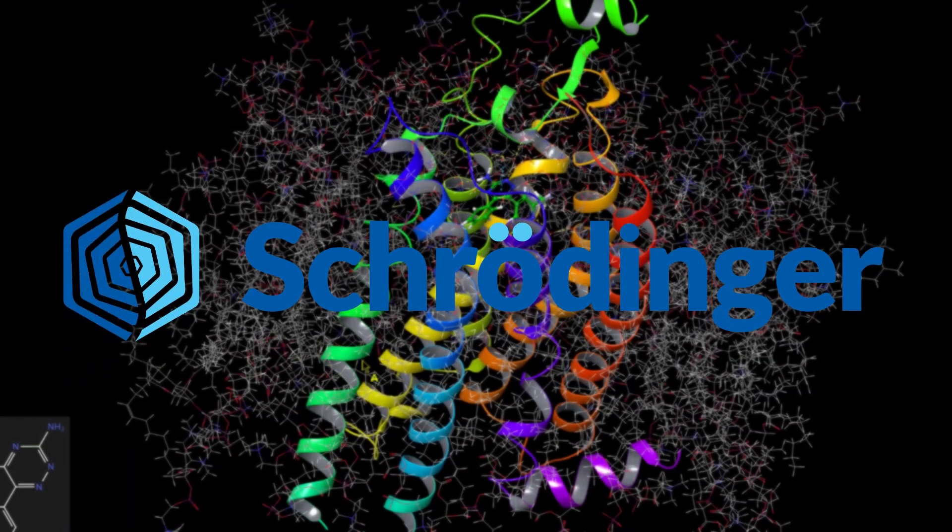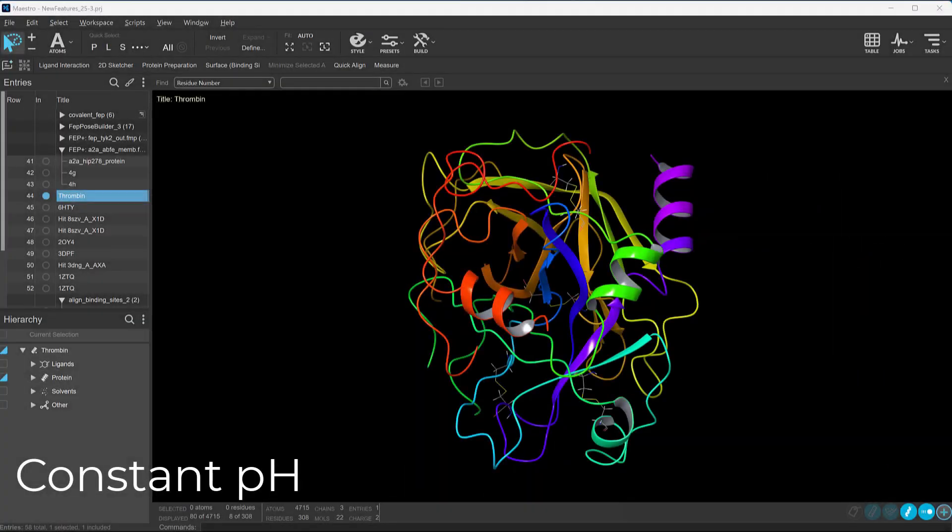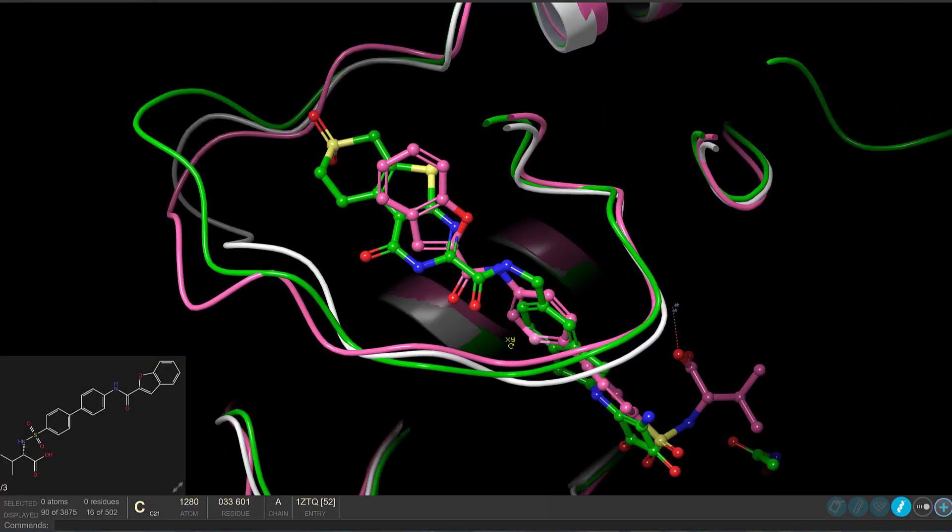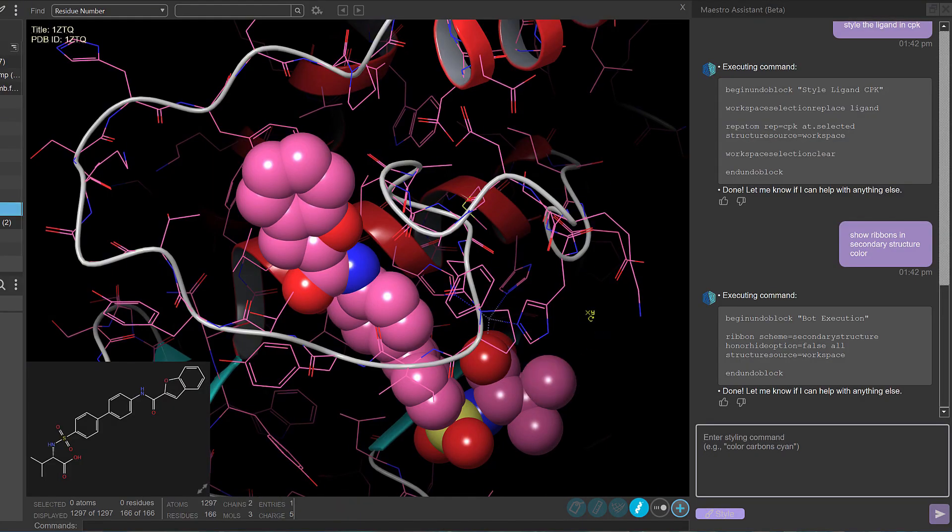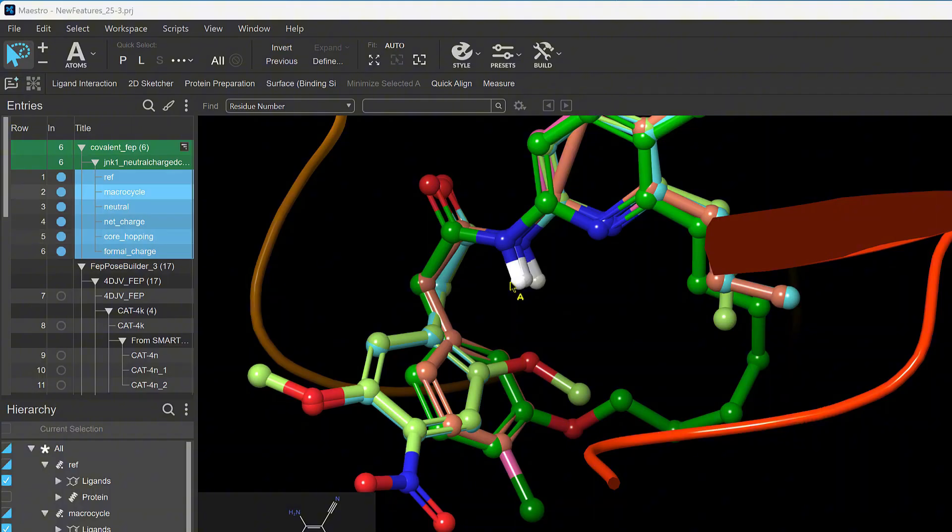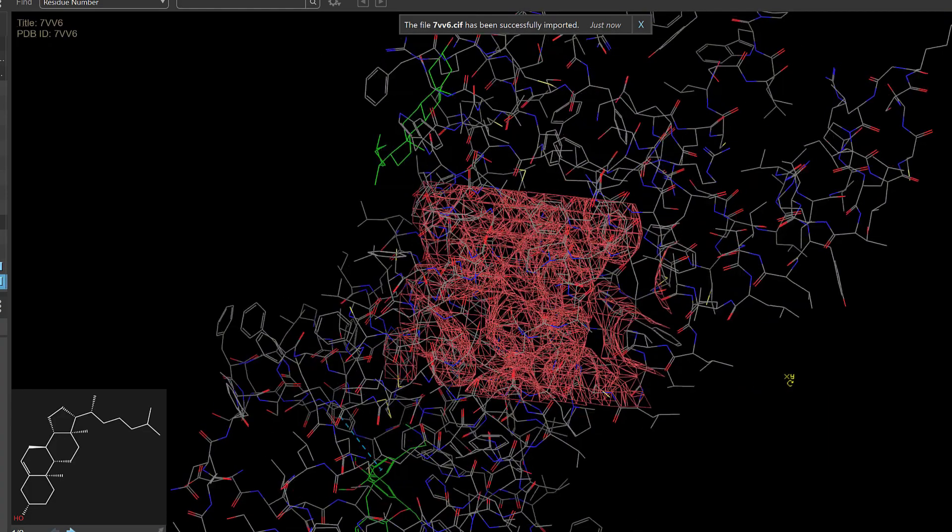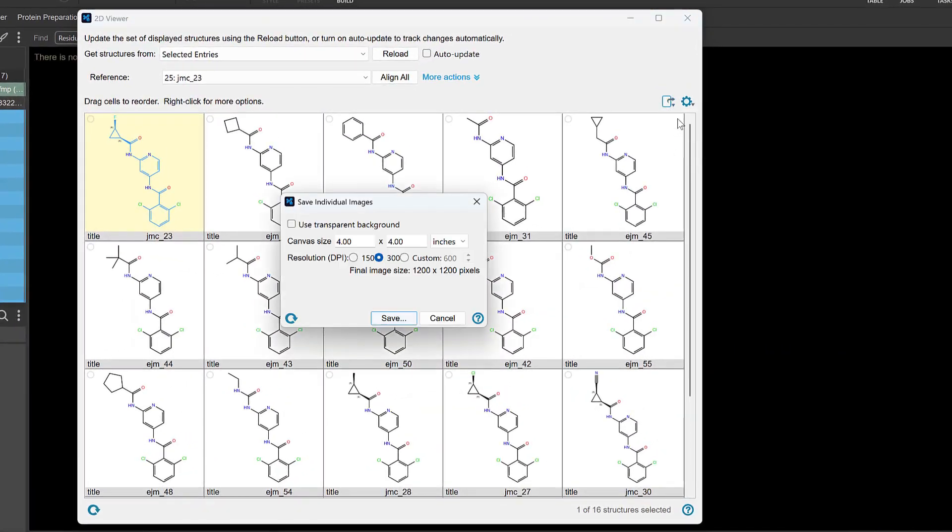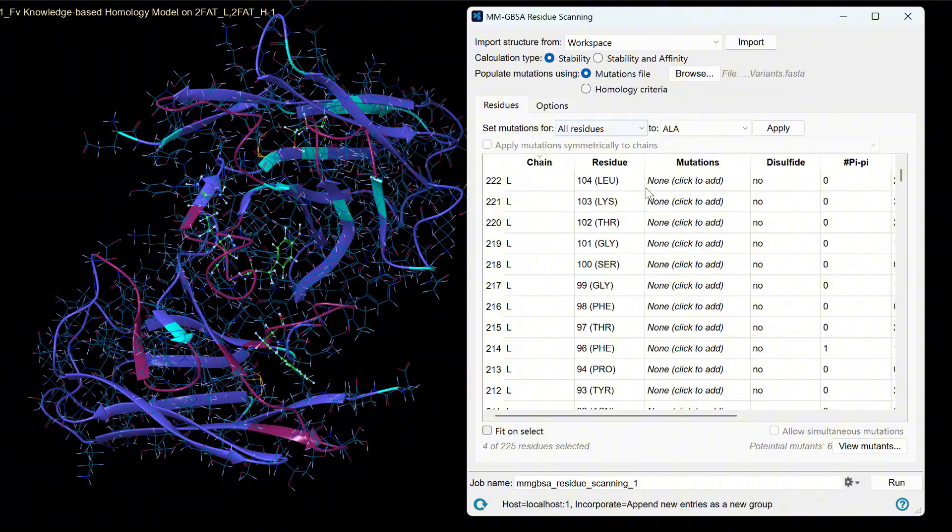Now compare that to Schrodinger, which takes a different approach. Their platform fuses physics-based simulations with machine learning to design molecules before they're ever made in a lab. Pharma companies use it to cut down trial and error in drug discovery. And Schrodinger is also building its own drug pipeline on top of the software. While Abcelera is focused on antibodies, Schrodinger is tackling small molecules, two very different angles on the same problem, making better medicines faster.